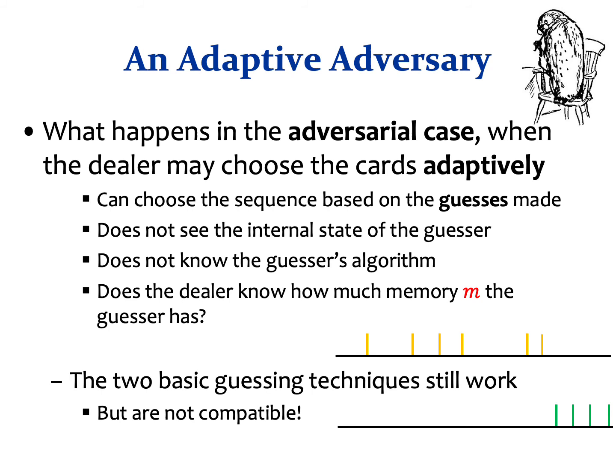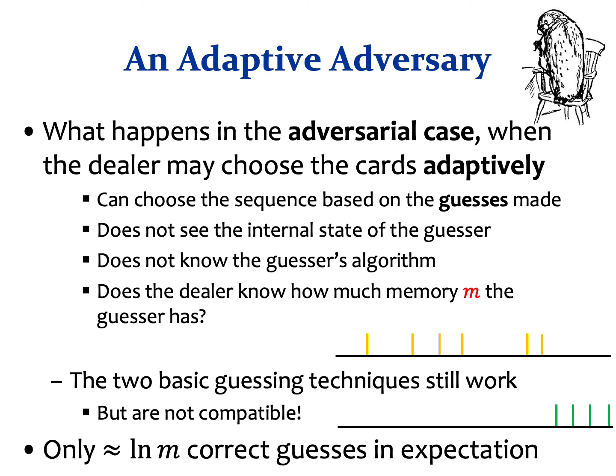Another thing to consider is whether the dealer knows how much memory the guesser has. We will show that in both cases there exists an adaptive dealer against which any guesser manages to make at most roughly ln M correct guesses.